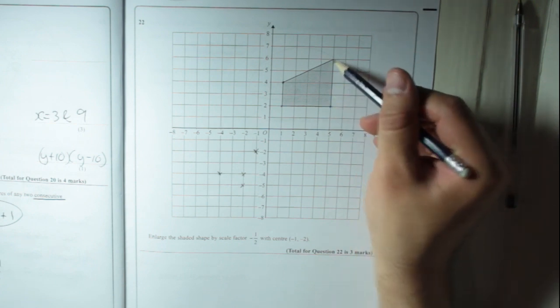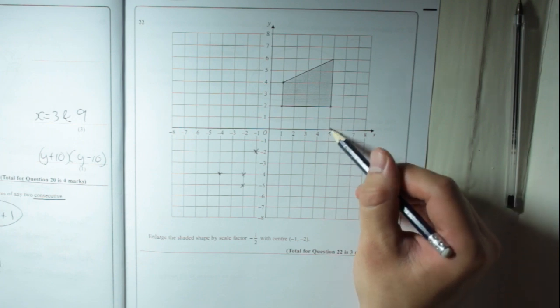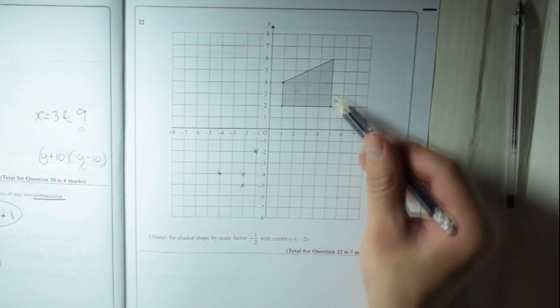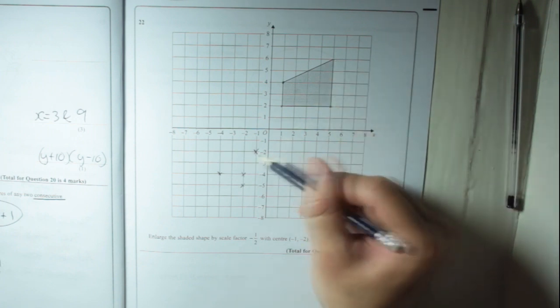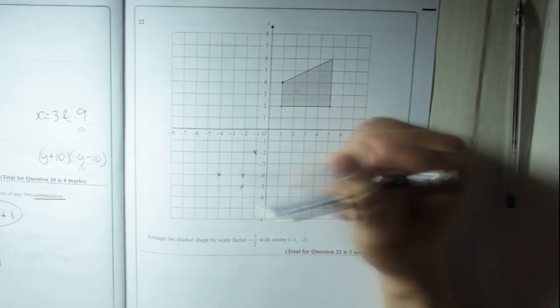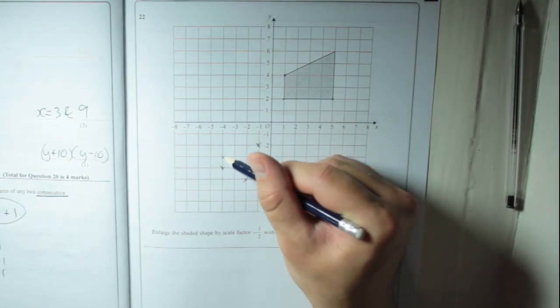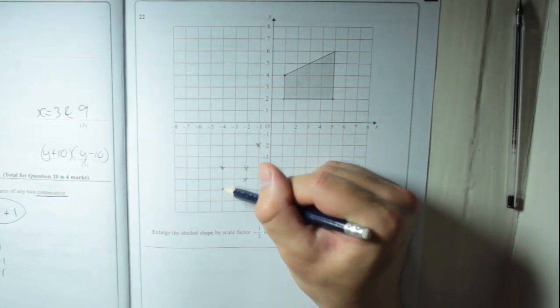Now we're going to do the very last one. So that one is going to be, again, 6 right, 2, 4, 6, 8 up. 6 right, 8 up. Halve those, 3 and 4. So 3 left, 4 down. So 1, 2, 3, 1, 2, 3, 4.